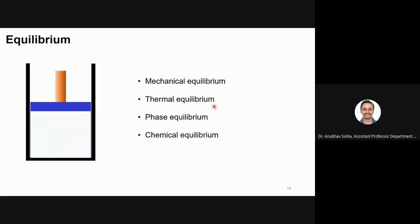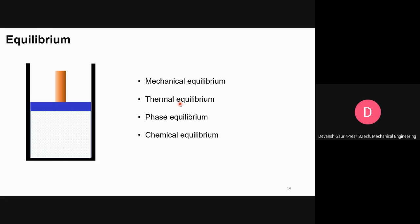A student asks what a temperature gradient is. The answer: it means temperature is varying with respect to distance — dT/dx is not zero. Thermal equilibrium means there is no temperature difference between the bodies; there is no delta T. All the bodies are at the same temperature, and then we call it thermal equilibrium.